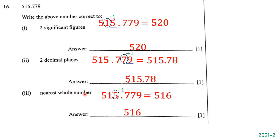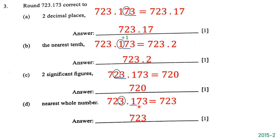Now we want to write 515.779 correct to the nearest whole number. The number in the ones place is 5, so we underline 7 to its right. Since 7 is greater than 5, we round up: 5 plus 1 is 6. We drop all decimal parts, giving us 516. The answer is 516.